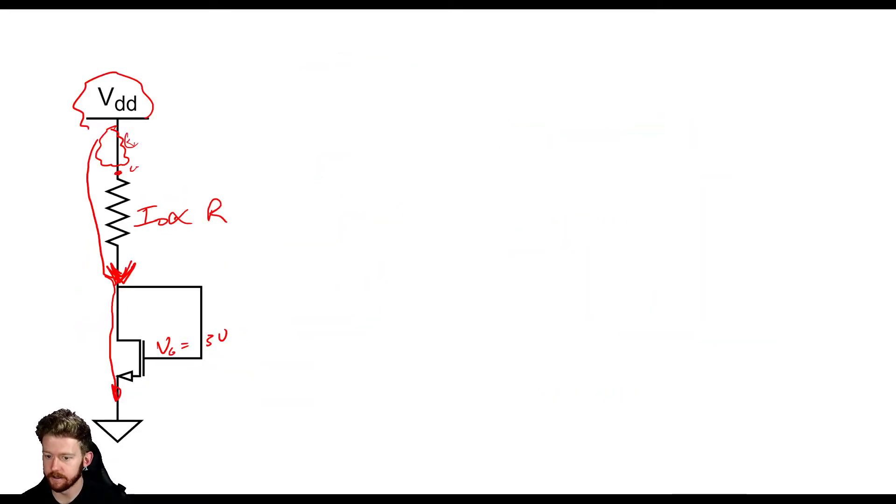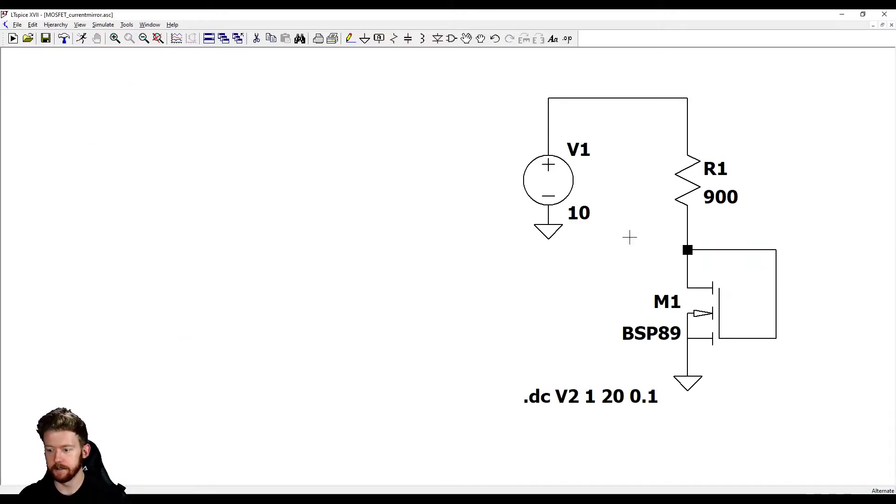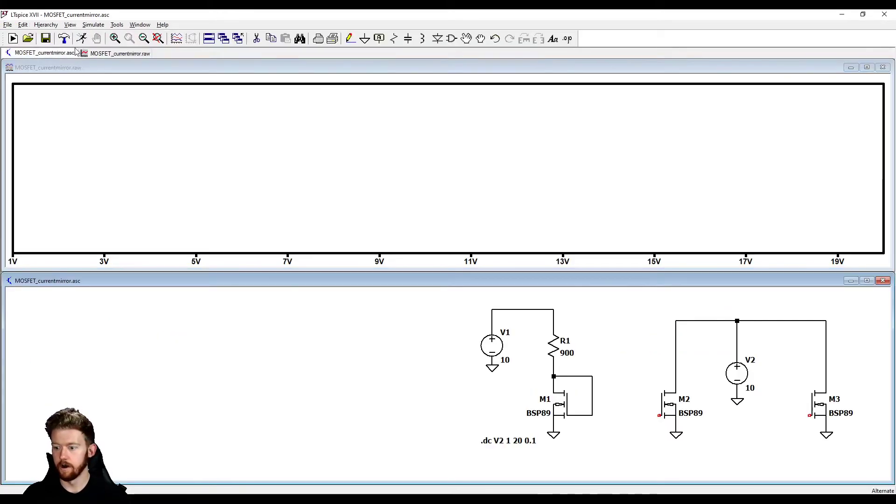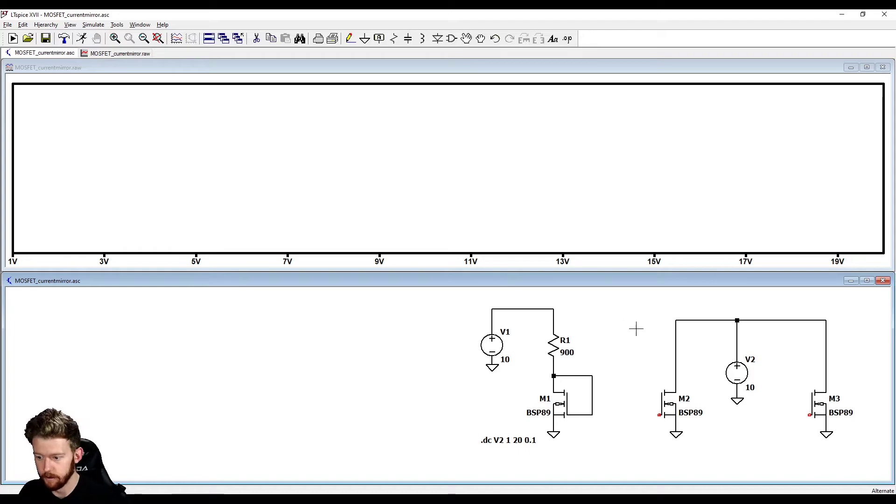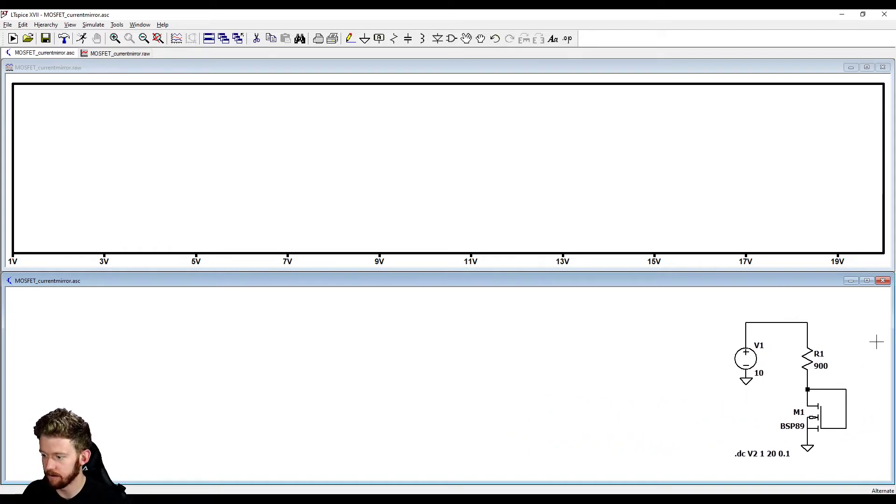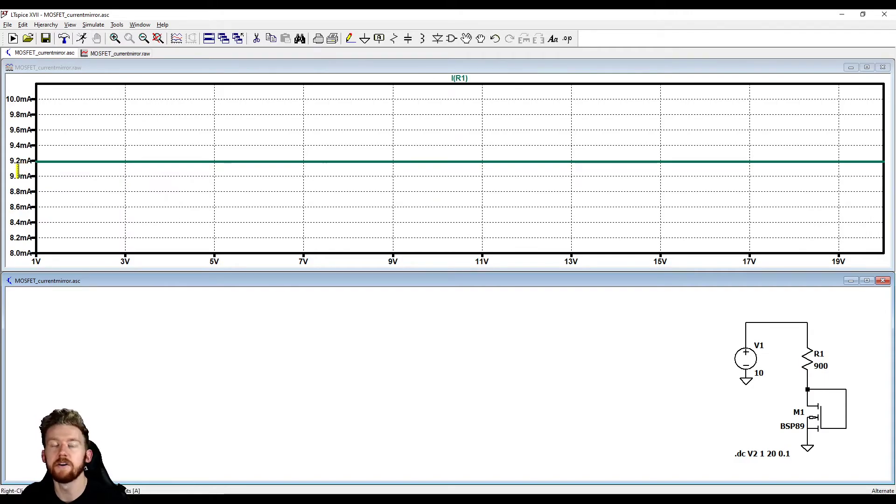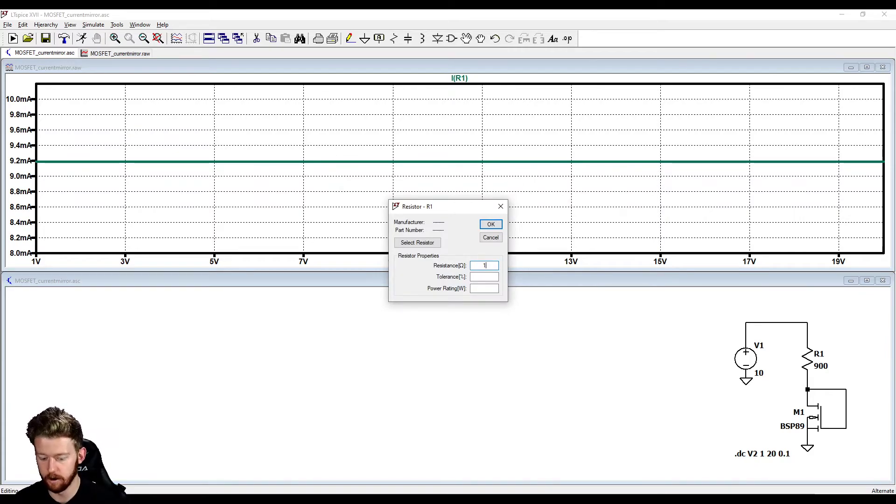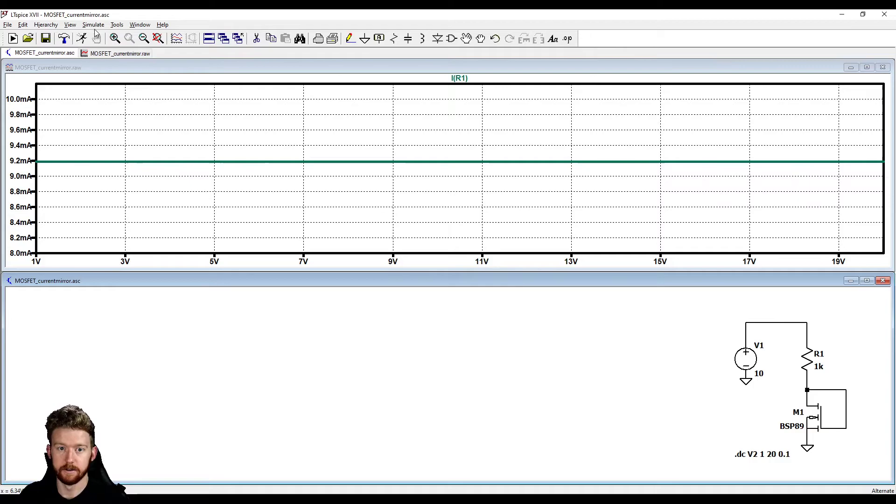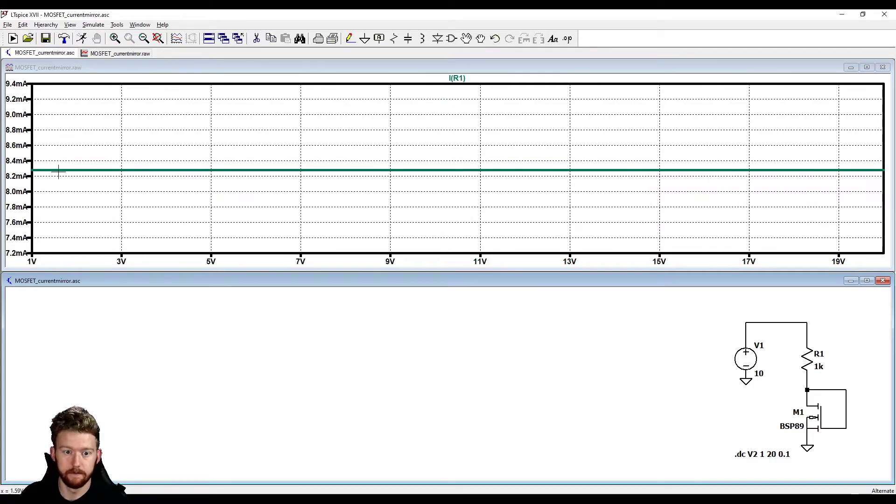So I have this first circuit implemented in LTSPICE and if I click run, oops don't want you to see that I do have something else hidden there. Okay so if I hit run and I probe the current through this resistor we're getting about 9.2 milliamps. So if I want to change this current maybe if I want to be a little bit lower I can change this to be 1k. Okay so instead of 9.2 now we have about 8.3.